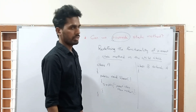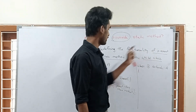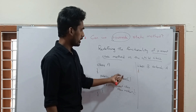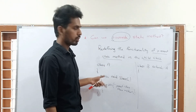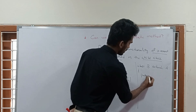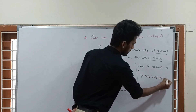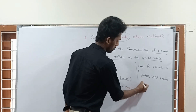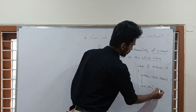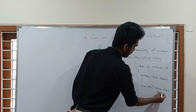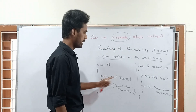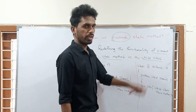Class B extends A. Now, redefining the functionality of the parent class method - the parent class method is show. We need to redefine it in the child class. We are going to redefine the body of the parent class method in the child class. So: public void show() - the method name is same, number of parameters is also same. Inside it, I will write 'child class show method'.